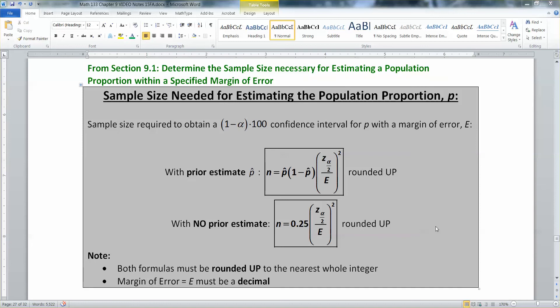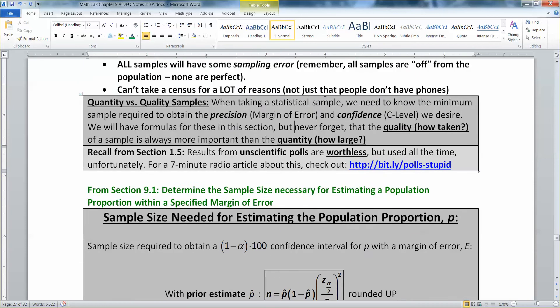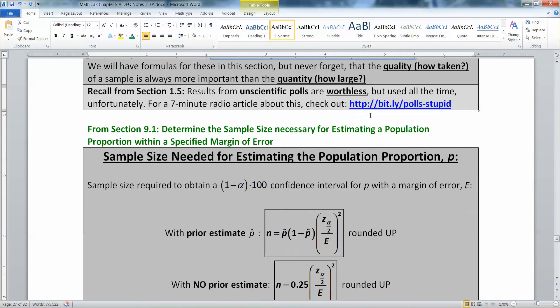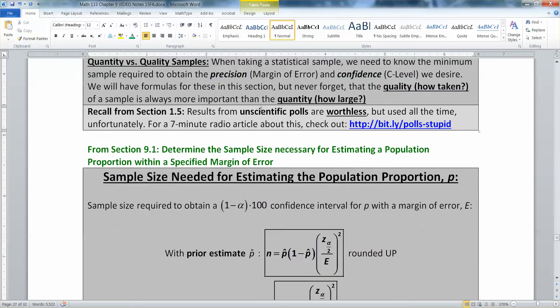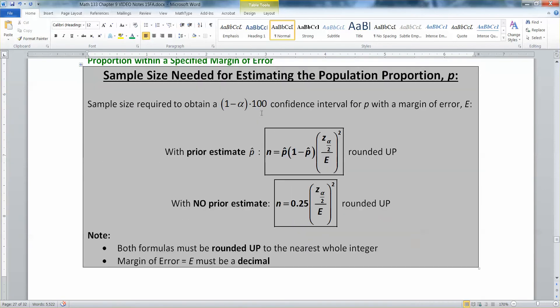Now that we've seen how important it is that we take a scientific poll, quantity is not as important as quality. Nevertheless, quantity is a little bit important. We need to know how many people to get in order to get that precision and confidence that we were interested in. Do we need 50 people, 500 people? We need some formulas to do that for us, and these are the first two ones we're going to learn.